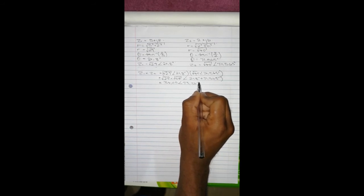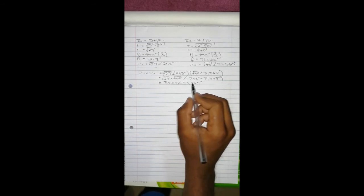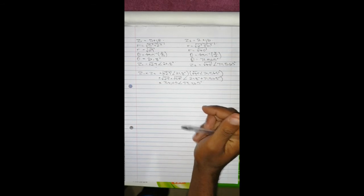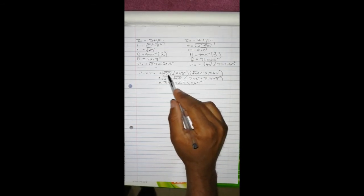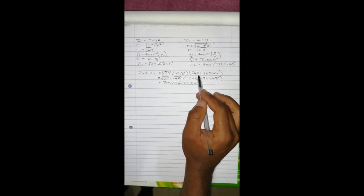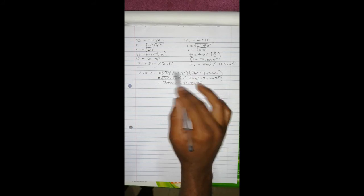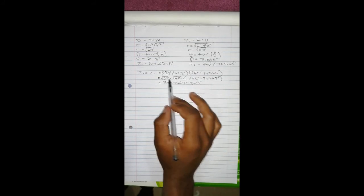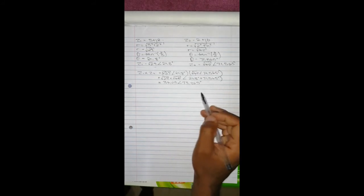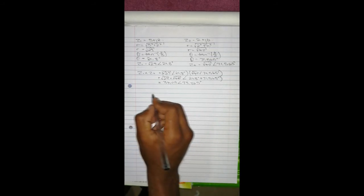Remember: with multiplication in polar form, you multiply the two coefficients and add the angles.